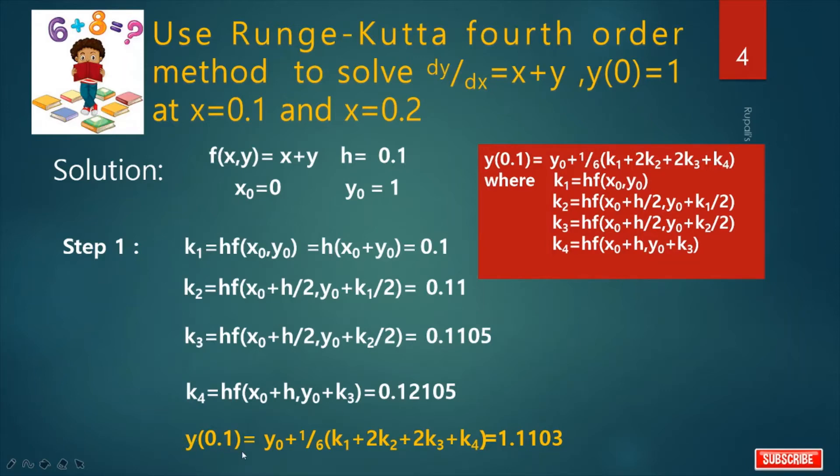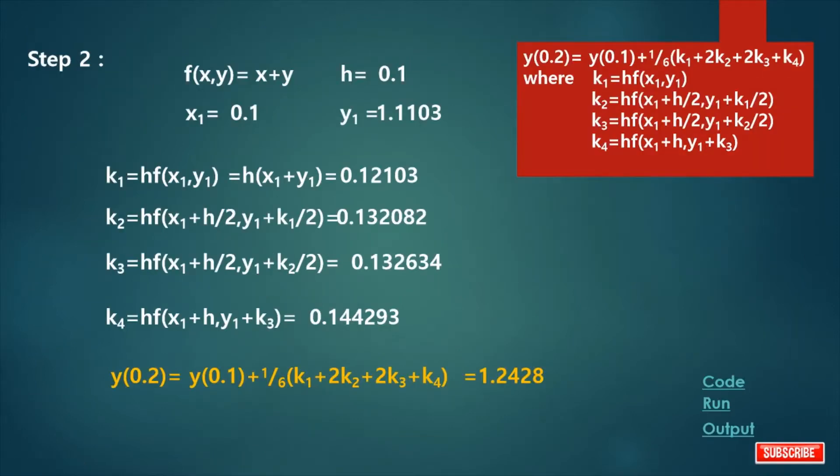We have to calculate the value of y(0.2). This is step 2. In step 2, here x1 is 0.1 and y1 is 1.1103, h is 0.1, and f(x,y) is x plus y. Again, we have to calculate the value of K1, K2, K3, K4 by this formula.